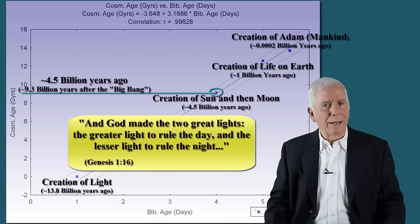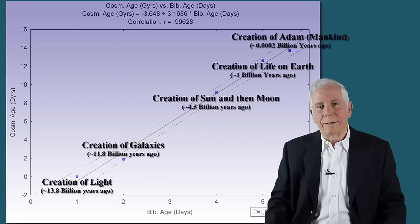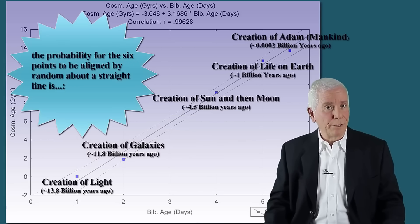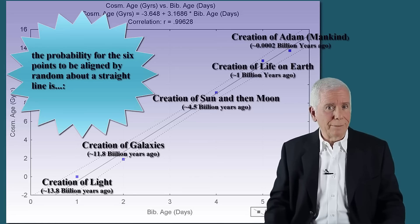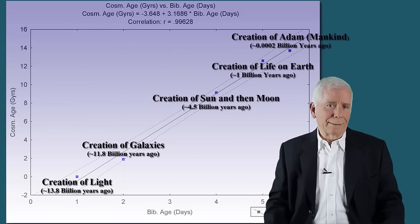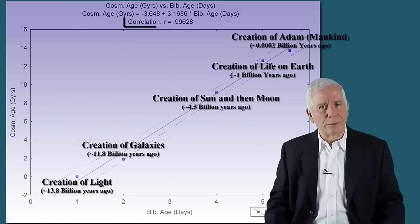because they are close, they are indistinguishable from one another. The probability for the six points to be aligned by random about a straight line, as they actually did, is 0.000021. Namely, two thousandths of one percent. The resulting linear correlation is 0.9963.